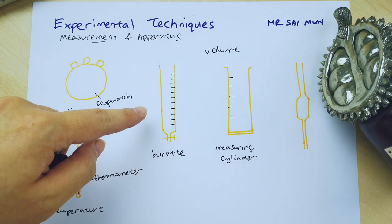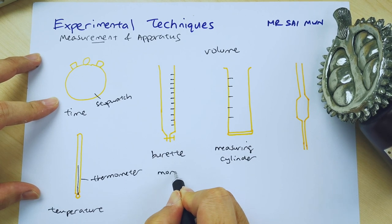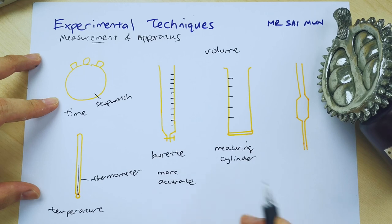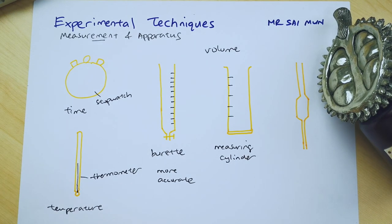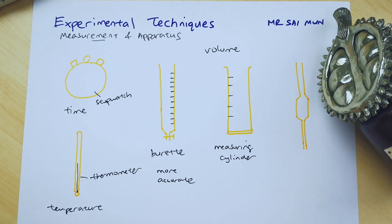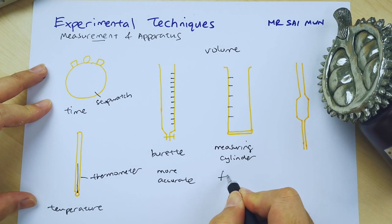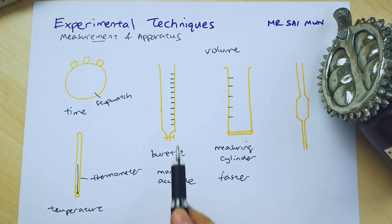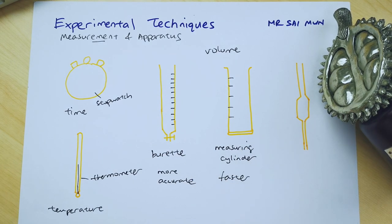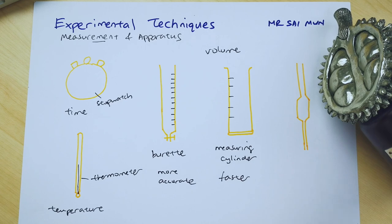If they ask you to compare: a burette is more accurate than a measuring cylinder. In IGCSE exams they may ask what is the advantage of a measuring cylinder — the answer is that a measuring cylinder can measure volume faster. So to summarize: burette is more accurate, while measuring cylinder is faster and therefore less accurate.